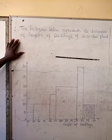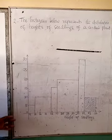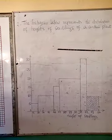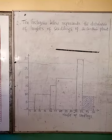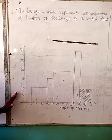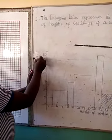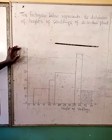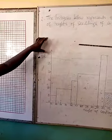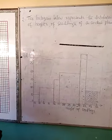The histogram below represents the distribution of heights of seedlings of a certain plant. If you look at it, you will realize that the class widths are not uniform — that is evident. It means that although the question does not state what is on the y-axis, you should now know that on the y-axis we have frequency density. When the class width is uniform, we have frequency on the y-axis and all bars will have uniform width.